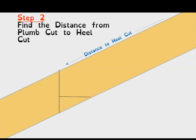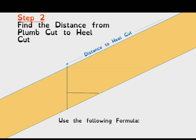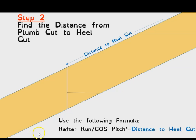There's a formula that will calculate the distance from the plumb cut down to the heel cut. You take the common rafter run — which is half the span of the roof — divide it by the cosine of the roof pitch in degrees. So take the run, hit the division sign, hit the cosine button on your calculator, and tap in whatever degrees the pitch is.